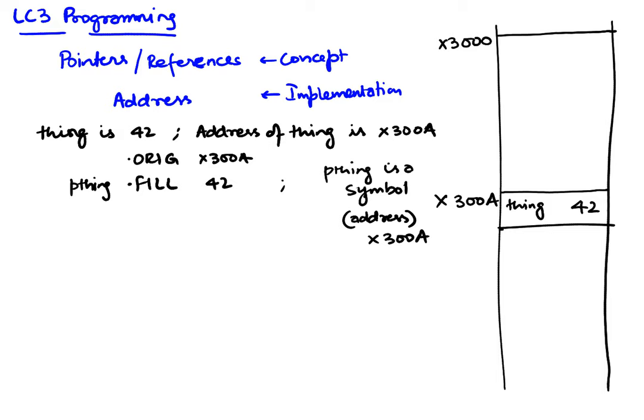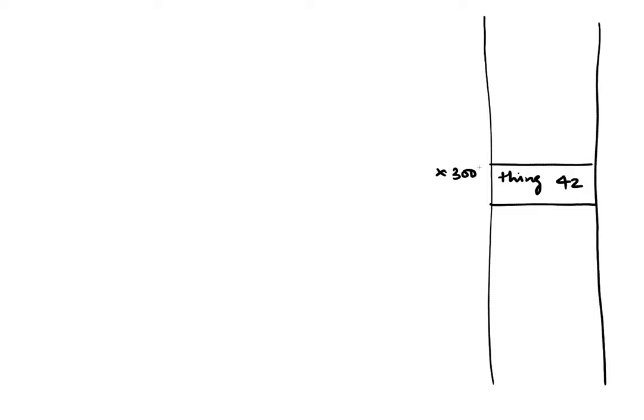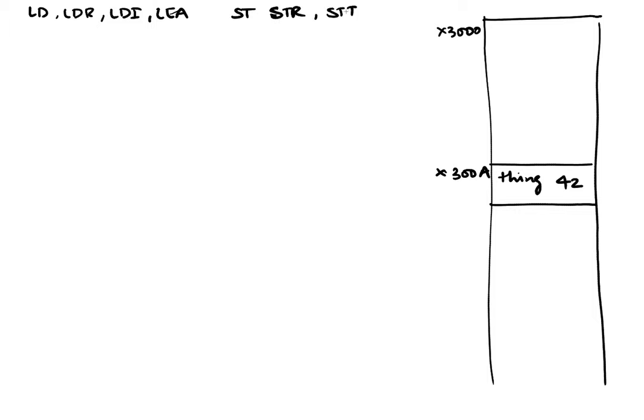Let's start a new page and look at memory again. Thing has a value 42 at memory location x3000A, and I'm going to write some code at x3000. A byproduct of this video is for you to understand all instructions related to data movement: LD, LDR, LDI, LEA, ST, STR, and STI. I'm going to cover all of these because they all in some way help us use the notion of a pointer.